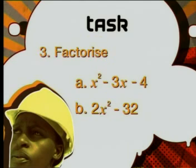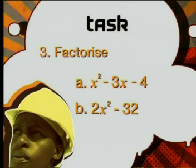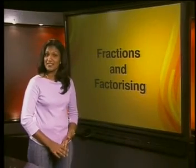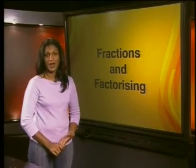Number 2: factorize a) x squared minus 3x minus 4, and b) 2x squared minus 32. So until next time, goodbye.